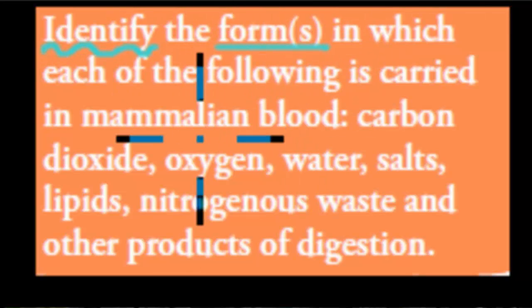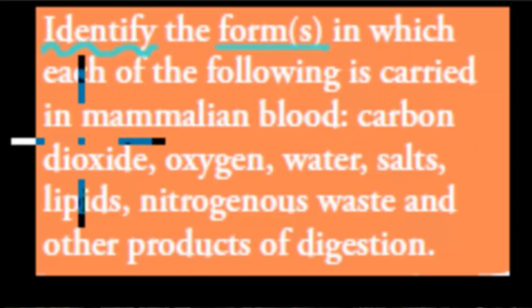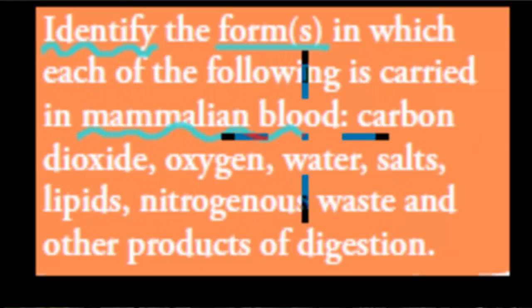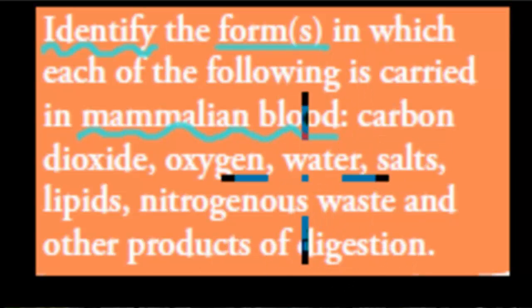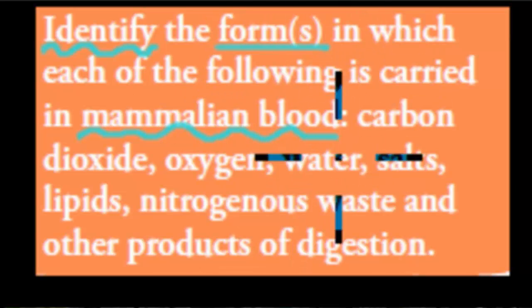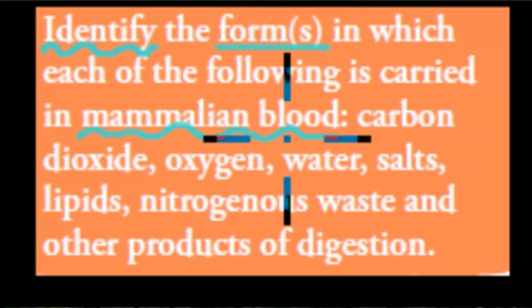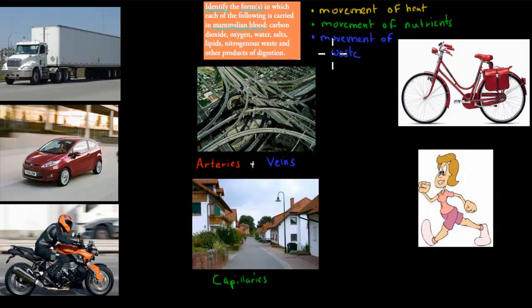Identify the forms in which each of the following is carried in mammalian blood. Mammalian blood just means blood of mammals — so humans, kangaroos, dogs are all mammals. Before we start, I want to go over quickly what the role of the blood and the blood vessels are.